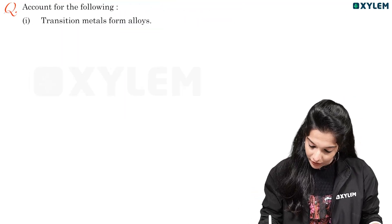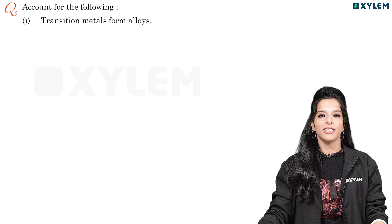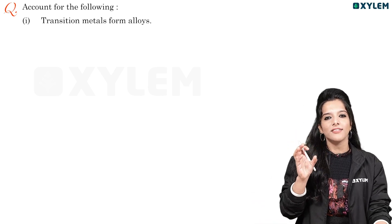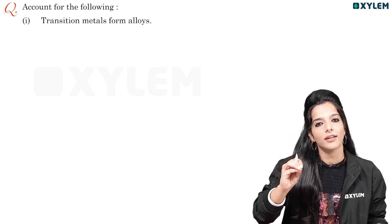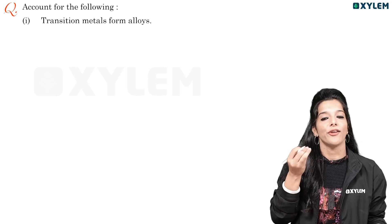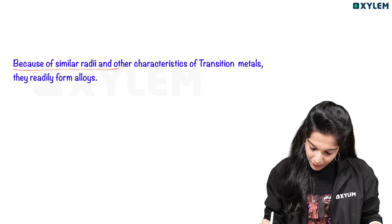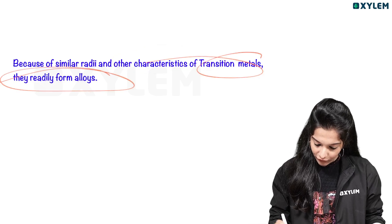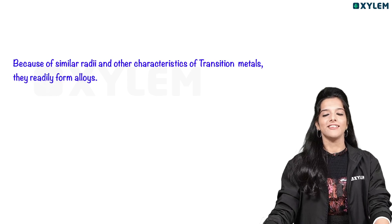Transition metals form alloys. How do transition metals form alloys? Because they have almost similar atomic radii. Because of similar radii and other characteristics of transition metals, they readily form alloys. This is a very important and very easy question.